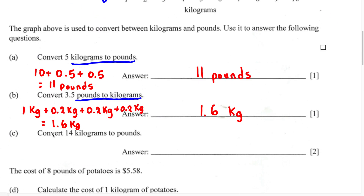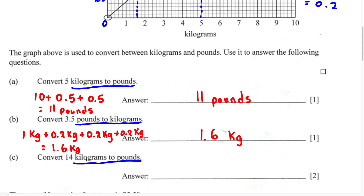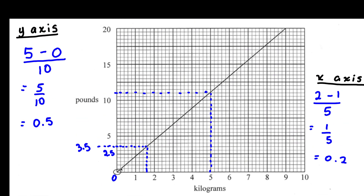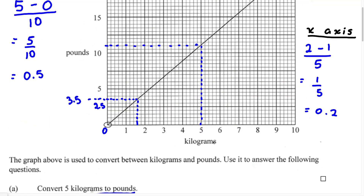For part C, convert 14 kilograms to pounds. They want us to go from kilograms to pounds, but the graph only goes up to about 9 kilograms. Don't panic — we do have 7 kilograms, and we know 7 is half of 14. So we'll find how many pounds equals 7 kilograms and multiply that by 2, because 7 times 2 is 14.